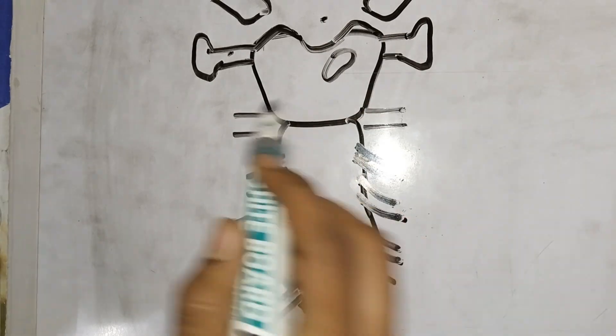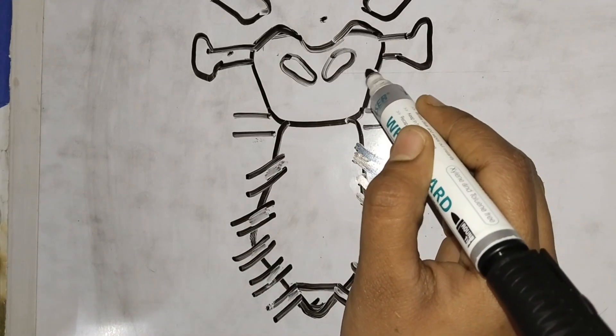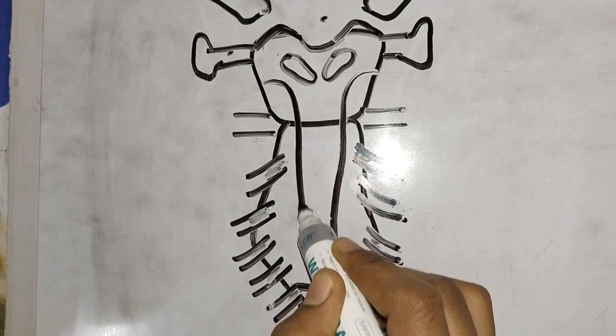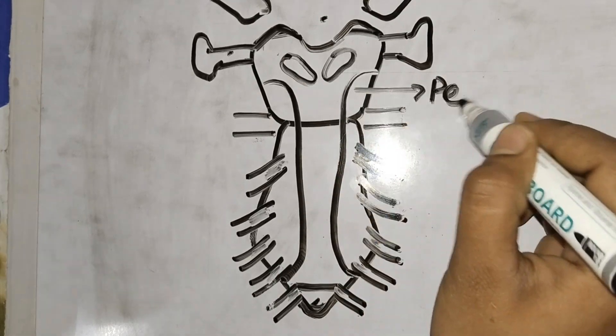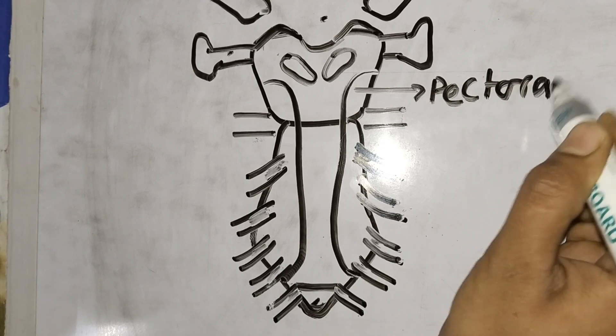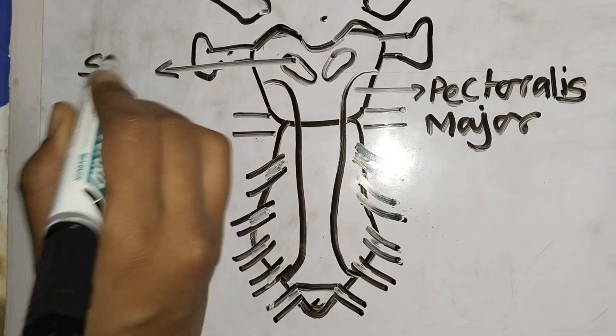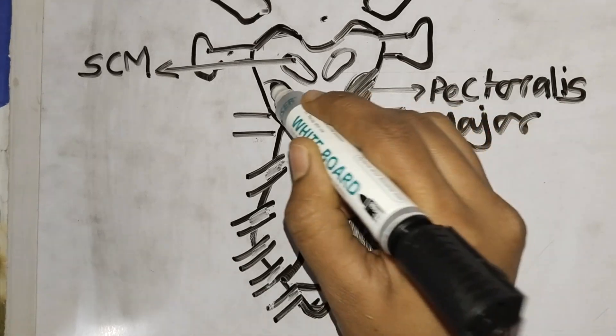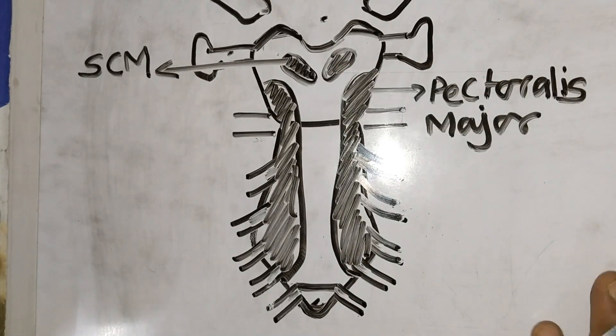And here we have our first muscle. This is nothing but sternocleidomastoid. This is nothing but the pectoralis major muscle. Let's color it because it's an origin. So this is the anterior aspect of sternum.